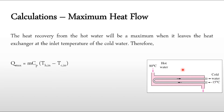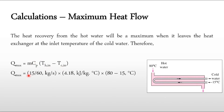First we calculate the maximum energy that can be extracted from the hot water currently being drained. Q_max = ṁ·cp·(Th_in − Tc_in). With ṁ = 15 kg/min converted to kg/s, cp = 4.18 kJ/kg·°C, Th_in = 80°C, and Tc_in = 15°C, the maximum Q is calculated as 67.9 kJ/s, or 67.9 kW.